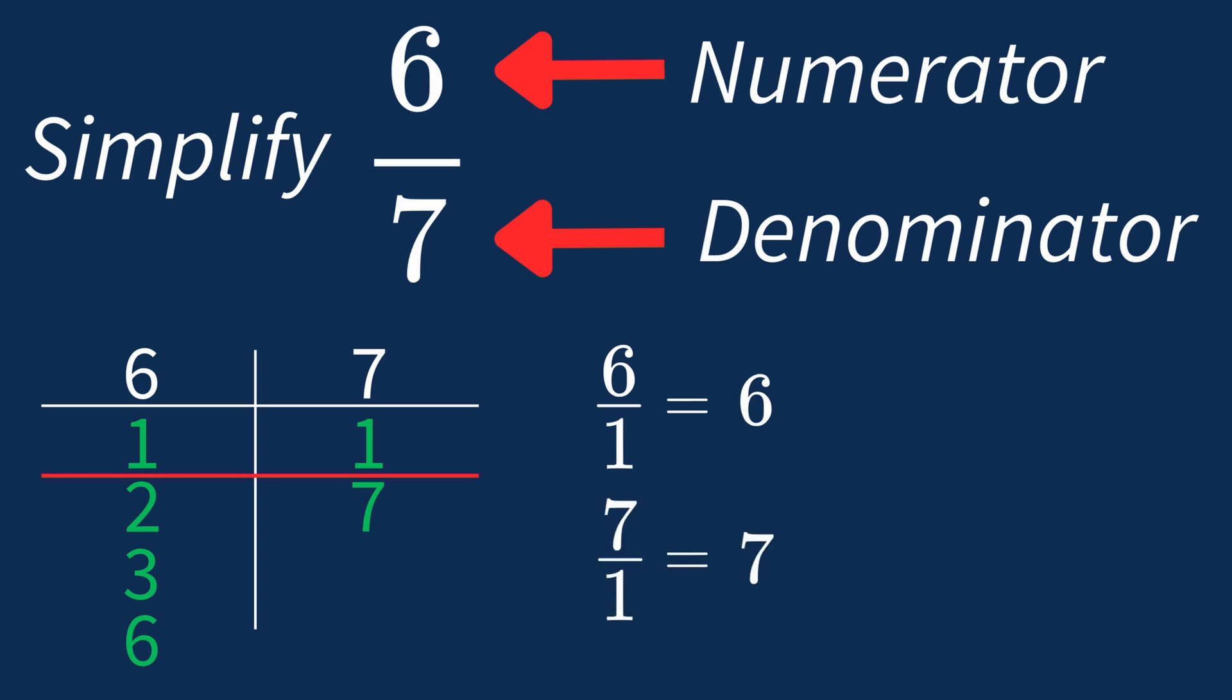So after dividing both the numerator and denominator by their greatest common factor of 1, we still end up with the same fraction, 6 over 7. This shows us that 6 over 7 is already in its simplest form. There's no larger number that can divide both parts evenly.